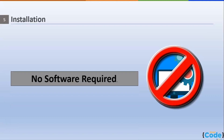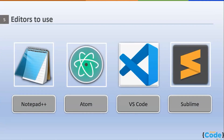The best part about HTML is its ease of use. Let's move on to the editors. An editor or IDE — Integrated Development Environment — is a software application that provides facilities to a programmer for software development. Just like Photoshop makes it easier to edit photos, an IDE makes it easier to write code. Some editors available are Notepad++, Atom, and VS Code.